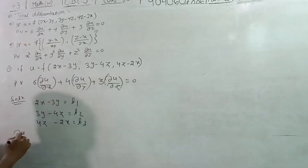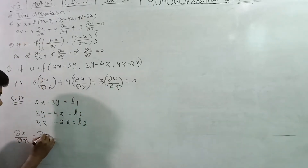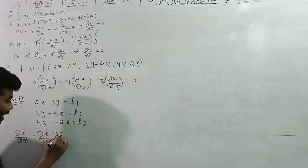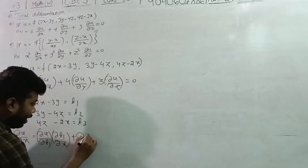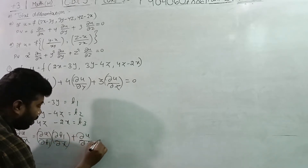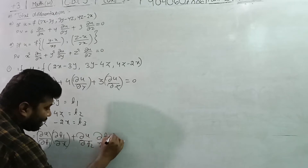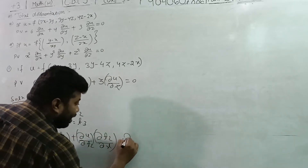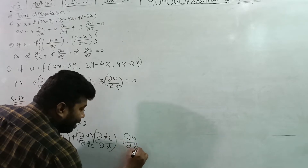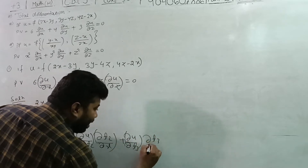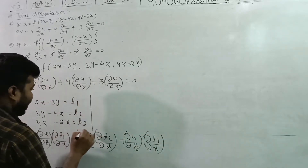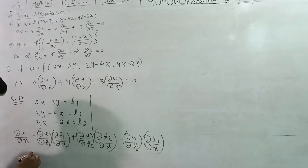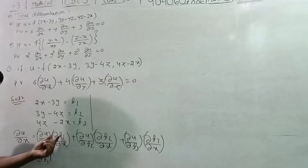Now, del u by del x — we apply the chain rule. Del u by del x equals del u by del t1 times del t1 by del x, plus del u by del t2 times del t2 by del x, plus del u by del t3 times del t3 by del x.